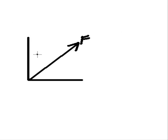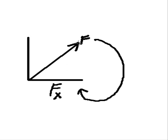This F can be broken up into its component parts. It has a component that runs along the x-axis. We usually call that Fx. It has another component that runs along the y-axis, and we normally call that Fy.